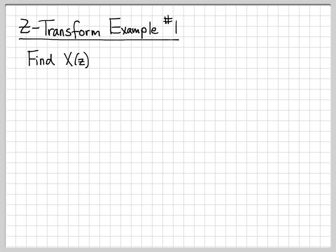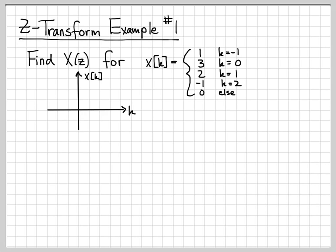So in this example, we are going to find the Z-transform for the signal X of K. We're going to start off simple with this signal that is equal to 1 at time minus 1, 3 at time equals 0, 2 at time equal 1, and negative 1 at time K equal 2, and it's 0 everywhere else.